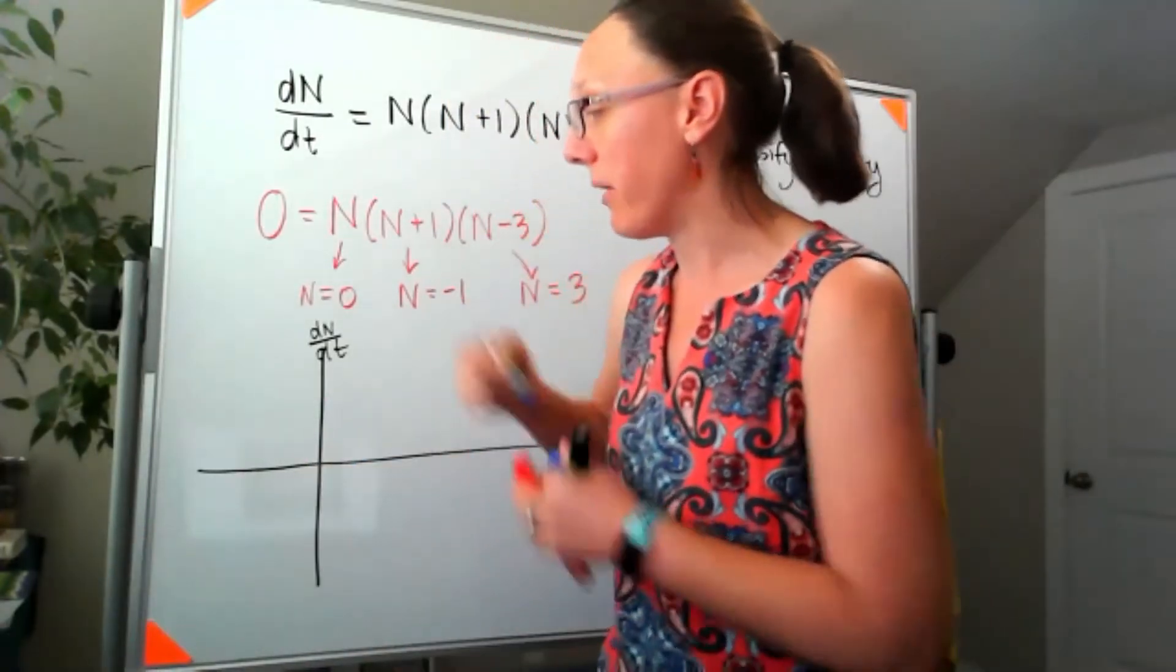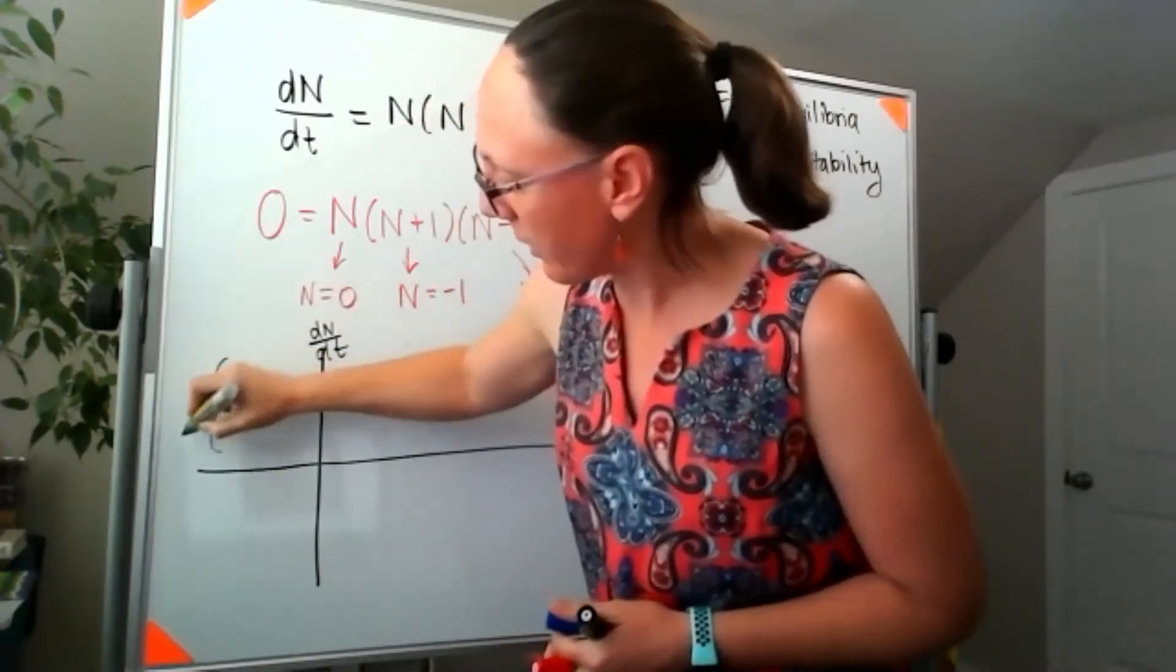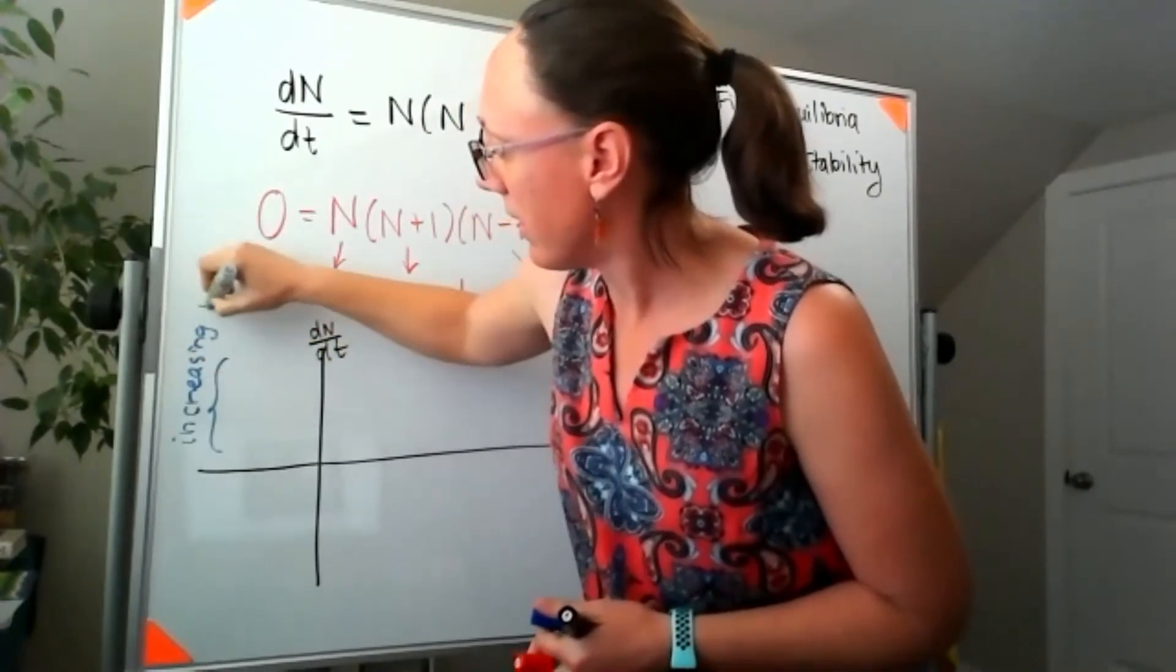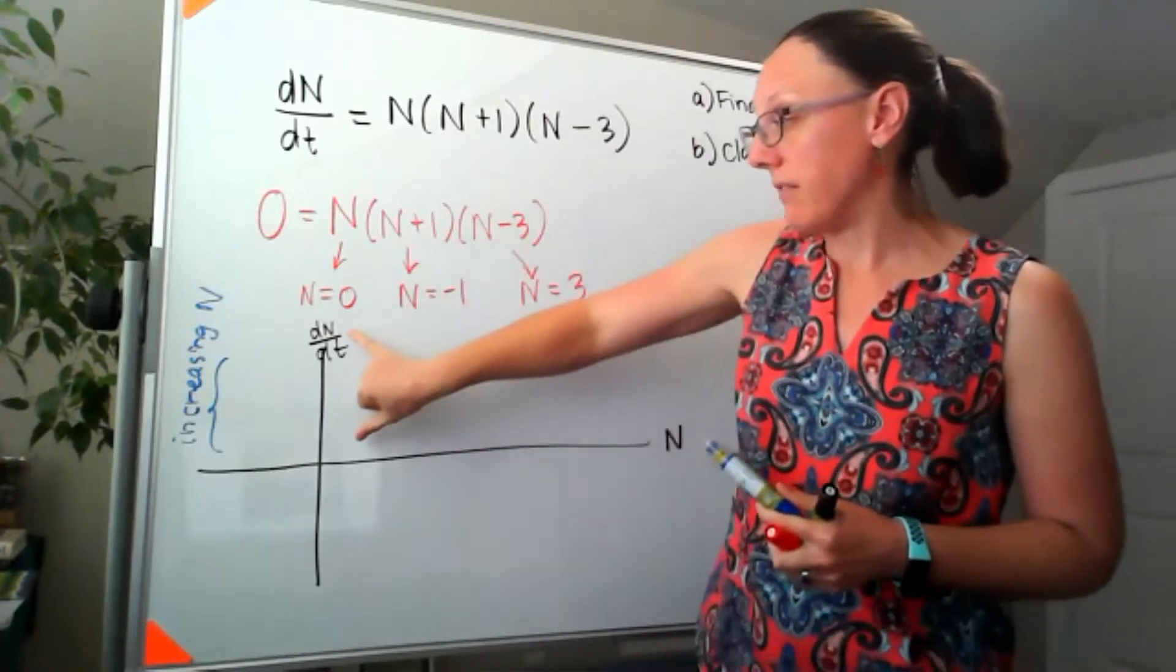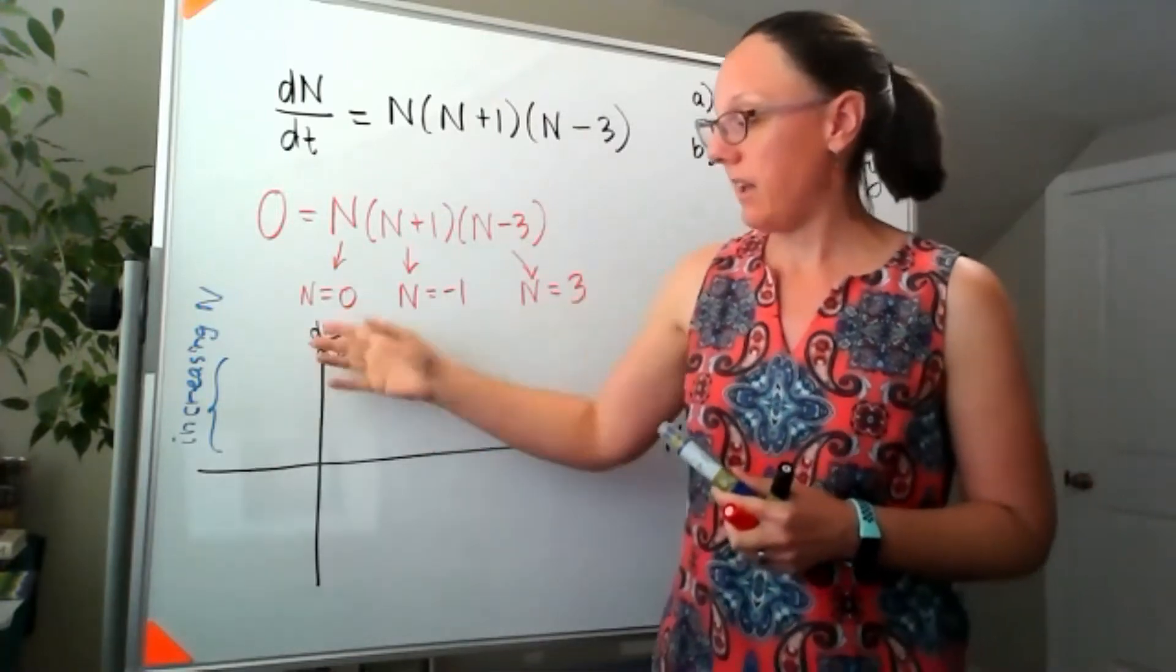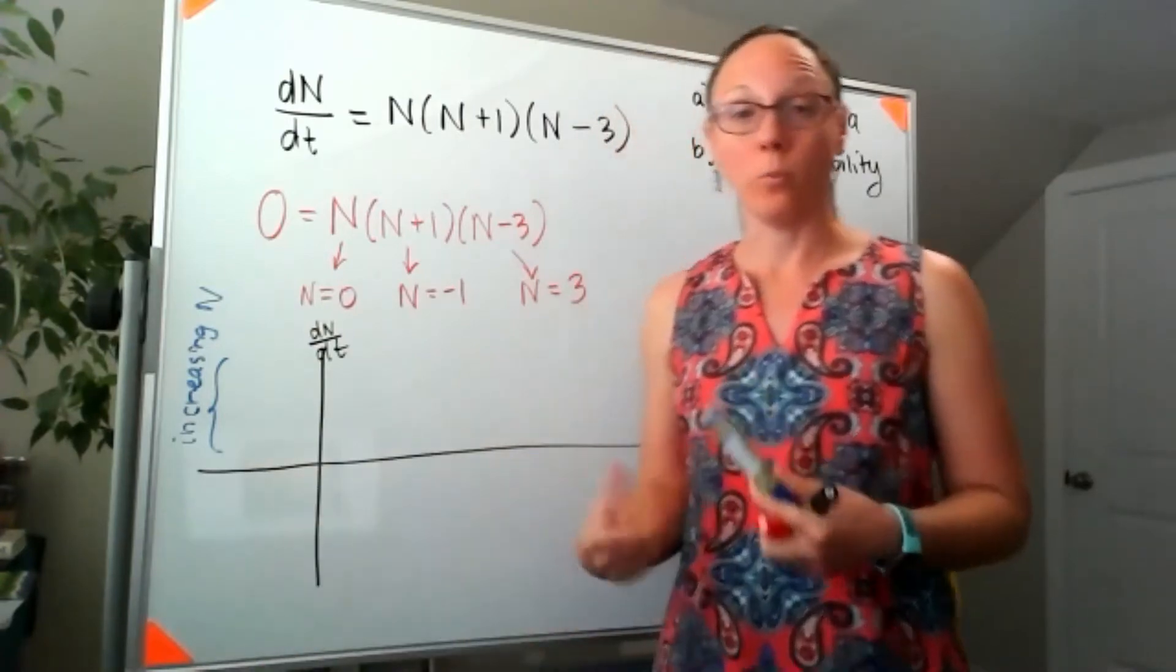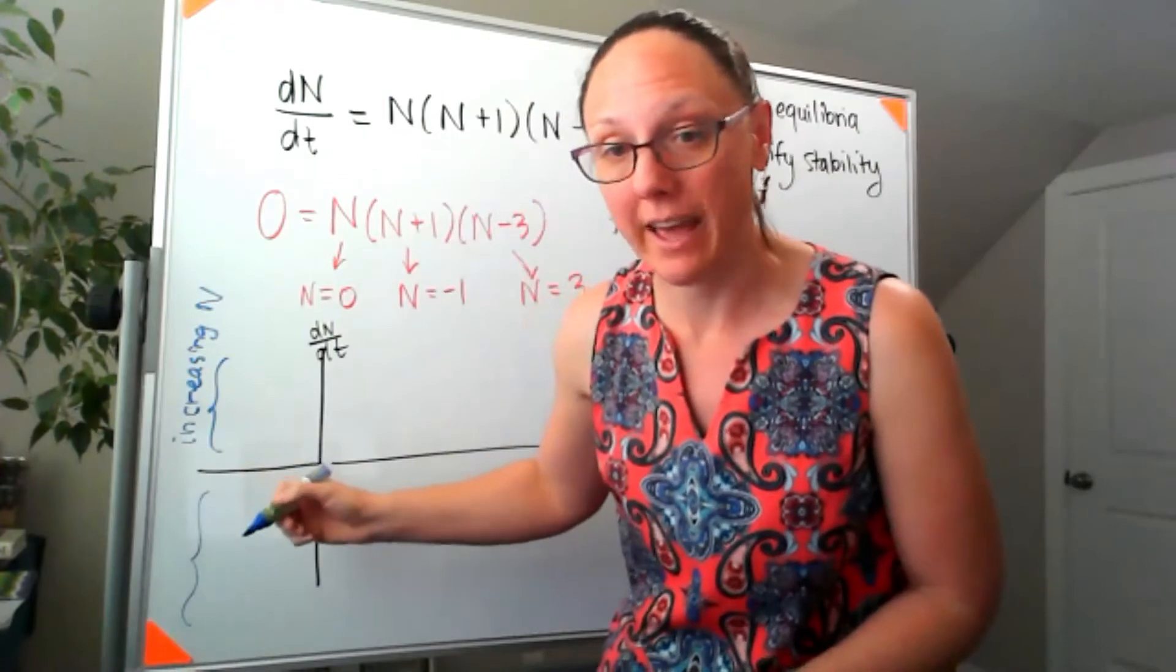So everywhere above the axis, we're going to be thinking about increasing n. At the same time, if dN/dt is negative, meaning below this axis, then everywhere down here we're talking about a decreasing n value.